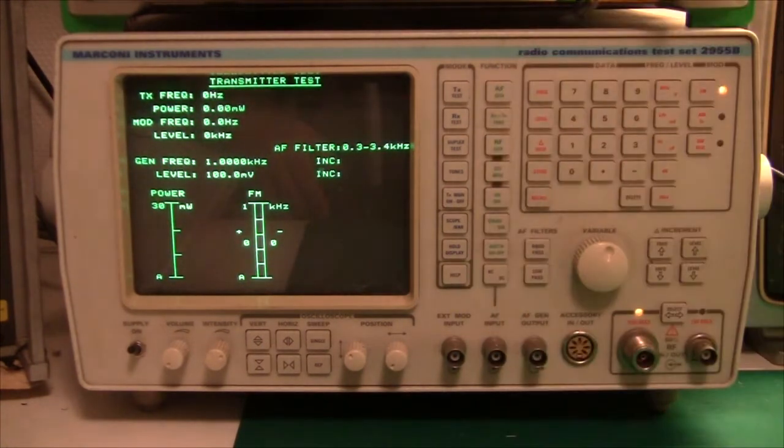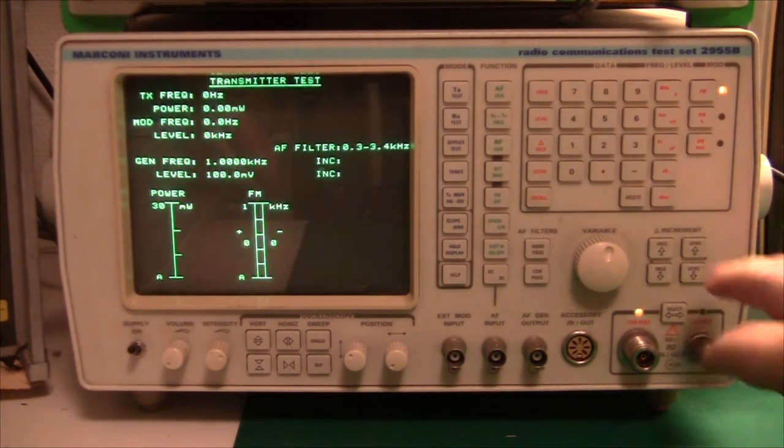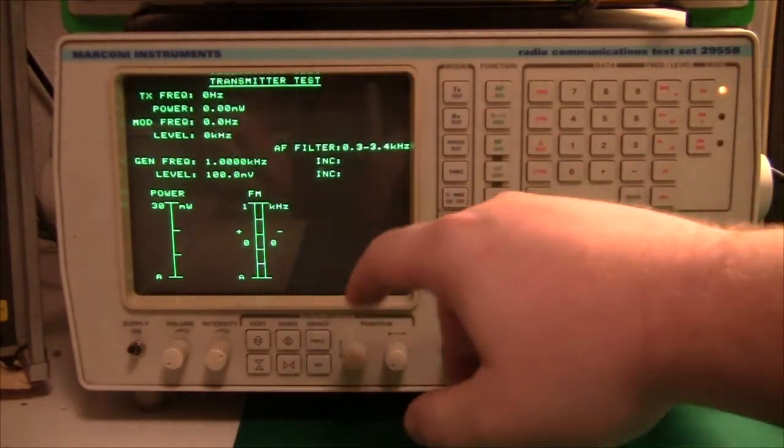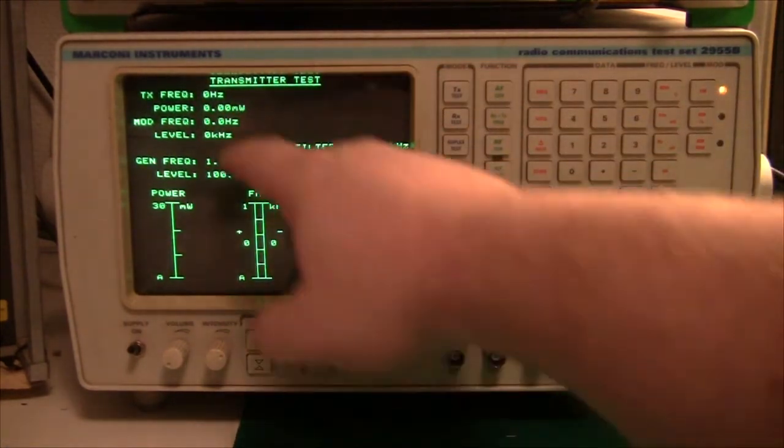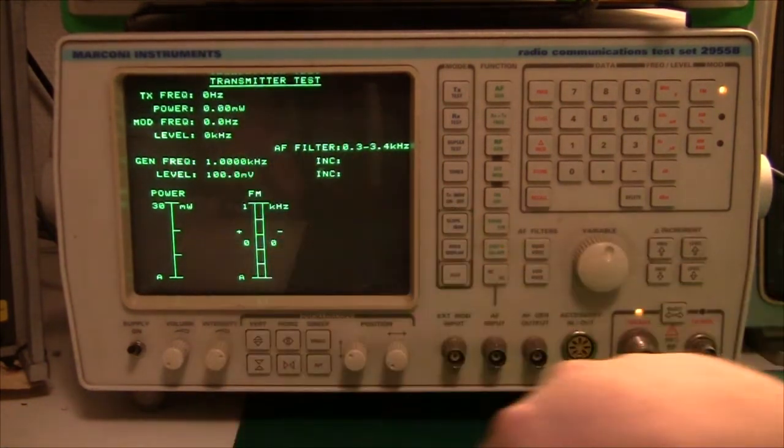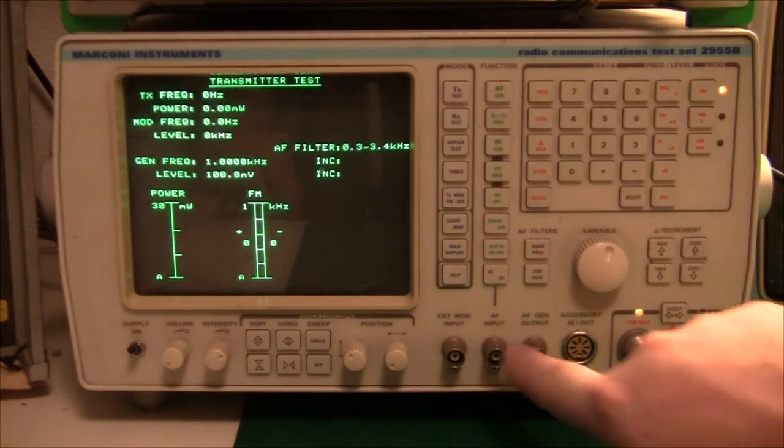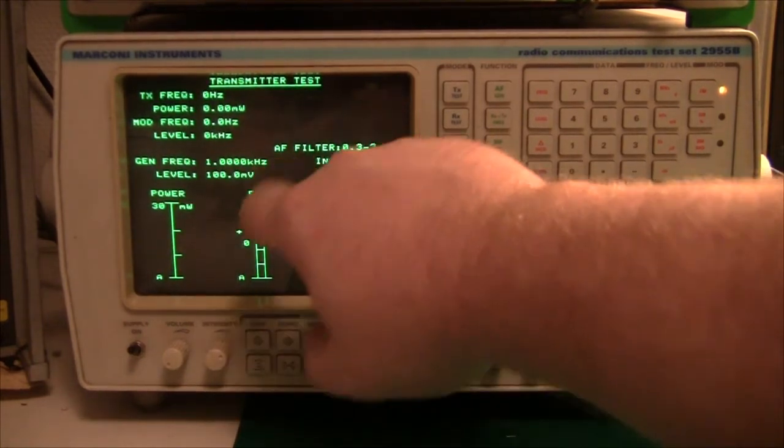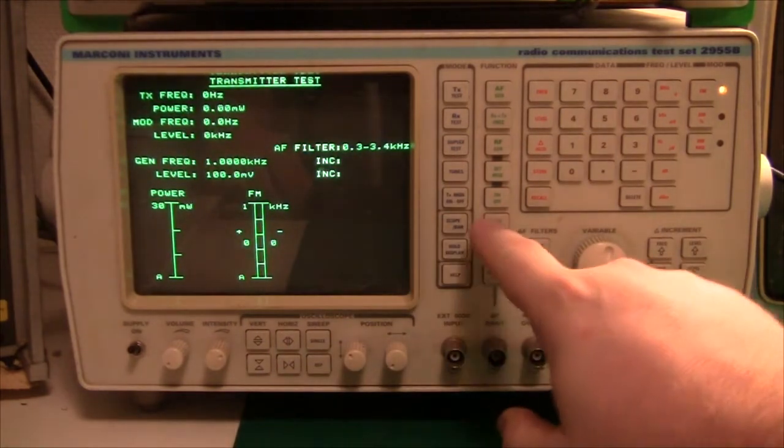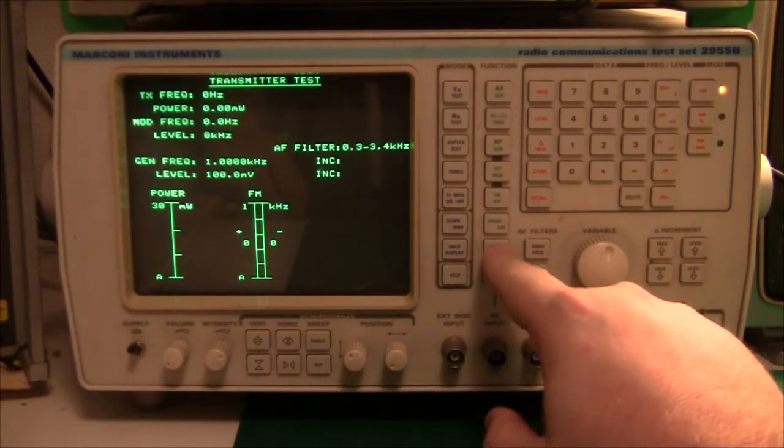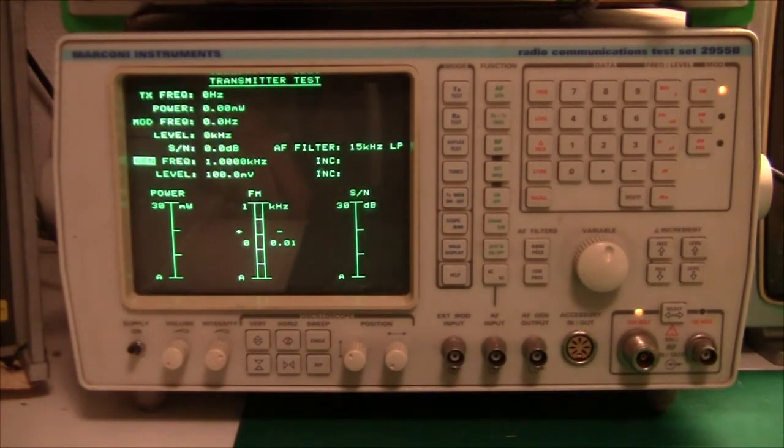So in this way, we can test the full path of the transmitter all the way from the audio input. And then over here, what comes into the machine will be the antenna output from the transmitter. So we can immediately see here on screen, we can test the transmitter frequency, the output power, modulation frequency, the modulation level. And we have some different frequency generators here that we can use for the audio output. And right now it's one kilohertz at 100 millivolts. We can also measure SINAD and distortion. So that was the transmitter testing.